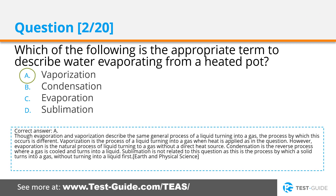The correct answer is A. Though evaporation and vaporization describe the same general process of a liquid turning into a gas, the process by which this occurs is different. Vaporization is the process of a liquid turning into a gas when heat is applied, as in the question. However, evaporation is the natural process of a liquid turning into a gas without a direct heat source. Condensation is the reverse process where a gas is cooled and turns into a liquid. Sublimation is the process by which a solid turns into a gas without turning into a liquid first.